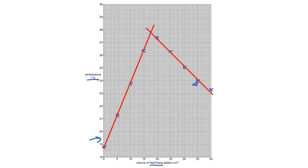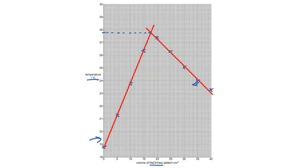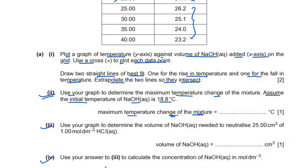The next sub-question asks: use your graph to determine the maximum temperature change of the mixture, assuming the initial temperature of NaOH is 18.8°C. Looking at the graph, the intersecting point is approximately at 27.8°C. The maximum temperature change is therefore 27.8 minus 18.8, which gives exactly 9.0°C.